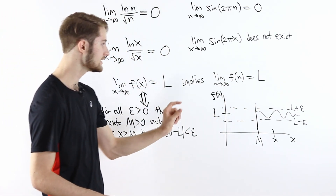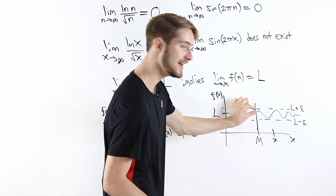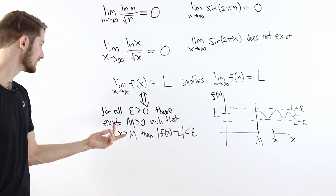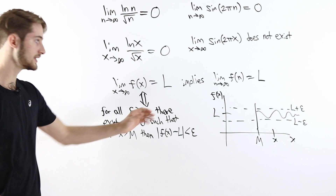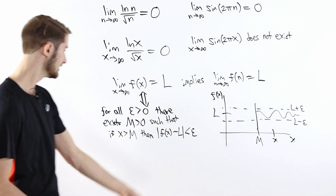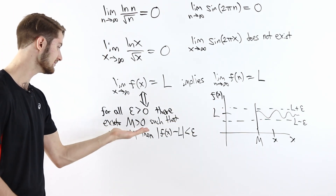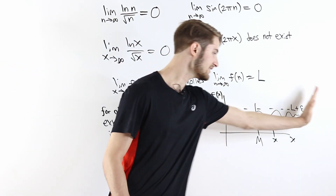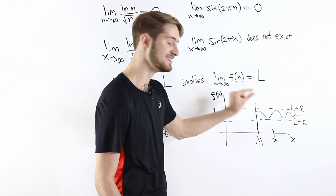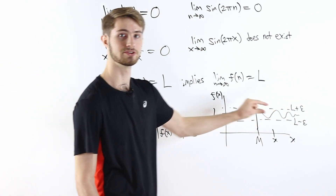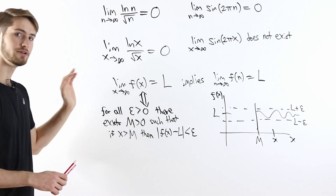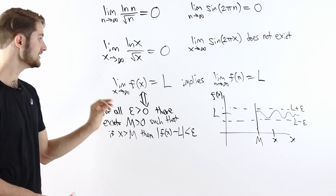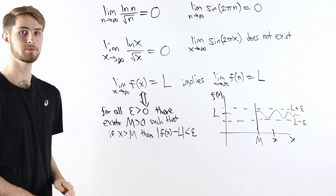We can make the function as close to L as we want by picking some epsilon greater than 0 for a tiny range, and that gives us a value of M where everywhere past M, the function has to be that close to the limit L. This is what it means for the limit as x goes to infinity of f(x) to equal L.